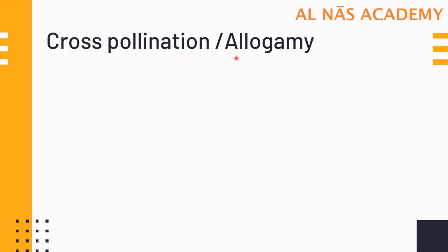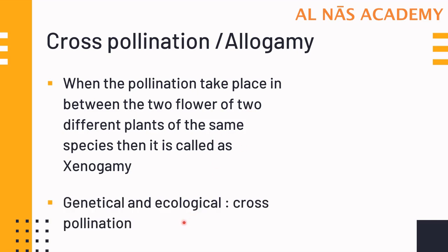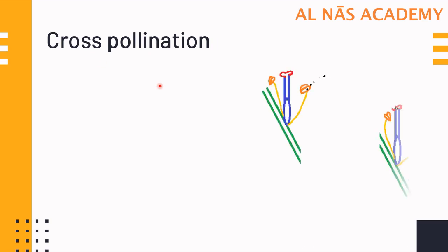Cross-pollination is also known as allogamy. Cross-pollination occurs when pollination takes place between two flowers of two different plants but of the same species. The flower and the plant are both different, but the species is the same — that is why genetically and ecologically it is known as cross-pollination. The anther releases pollen from one flower, which goes to the stigma of another flower of a different plant but same species.